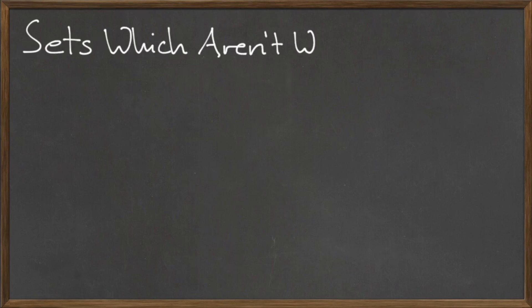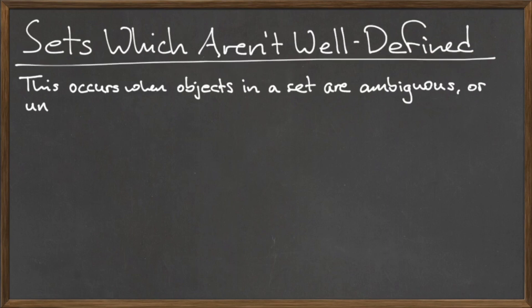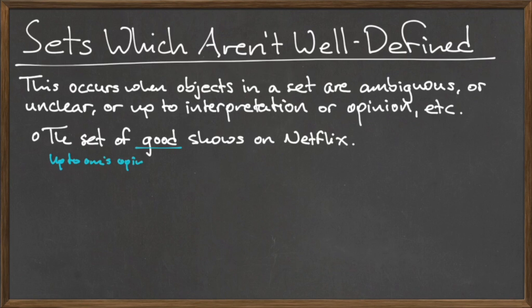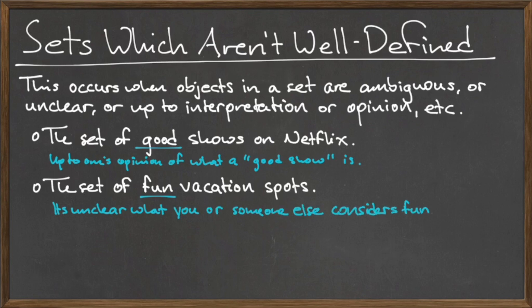Sets that are not well-defined are sets whose objects are ambiguous, unclear, or up for interpretation or debate. For example, the set of good shows on Netflix, or the set of fun vacation spots, are not well-defined sets, since every person has their own idea of what good or fun means, and so there is no way to definitively narrow down exactly what elements should belong to these sets.